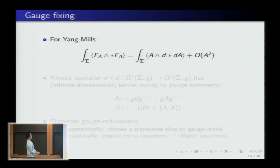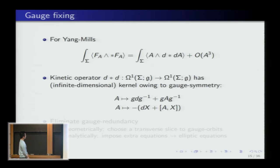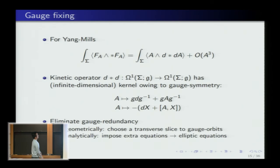For Yang-Mills, we have a kinetic term and higher-order terms. The kinetic operator has an infinite-dimensional kernel because of gauge symmetry: the infinitesimal gauge action sends A to A + Dₐ X where X lives in the Lie algebra. When doing perturbation theory around A = 0, the image of D lies in the kernel of the kinetic operator, so we need to eliminate that gauge redundancy. Geometrically: choose a slice transverse to gauge orbits. Analytically: impose extra conditions to get elliptic equations, which we can invert up to a finite-dimensional space.